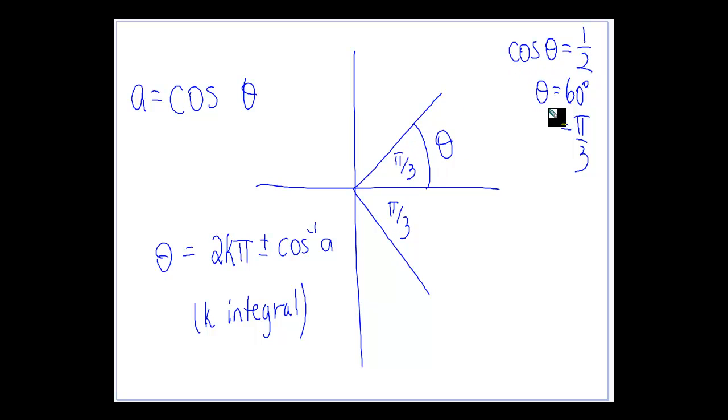So the idea is that every time we do a revolution we need to get to the positive x-axis and then add or subtract the related angle there.